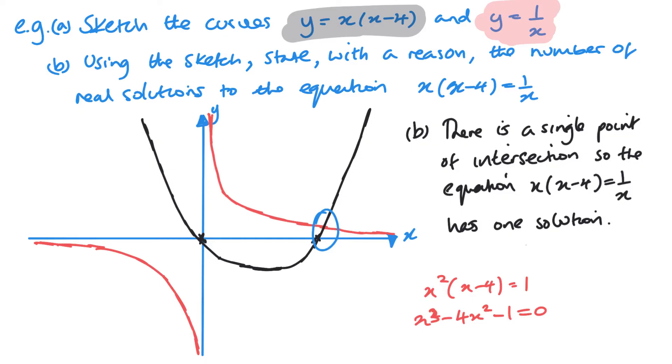Now it doesn't ask me in this particular question to find the coordinates. But if I essentially solve this equation, then it would give me this coordinate here, which should be a little bit more than 4. Because this is x equals 4. However, the reason it doesn't ask you is because it is quite challenging. And it's far above what you'd be expected to do in A level maths.